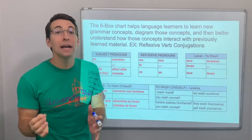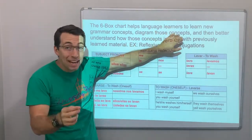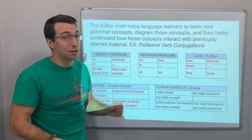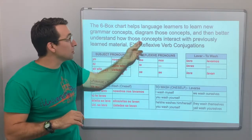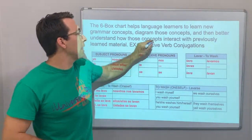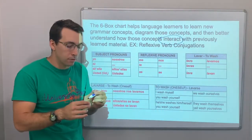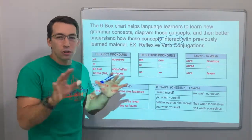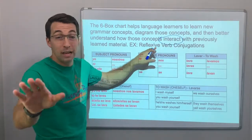Why? Why is it important? Check this out. The six-box chart helps language learners to learn grammar concepts, diagram those concepts, and then better understand how those concepts interact. This is the key. Interact with previously learned material. So, let's look at this, and this is later to come.